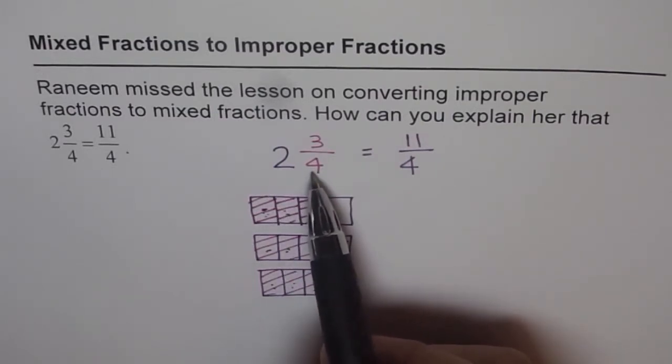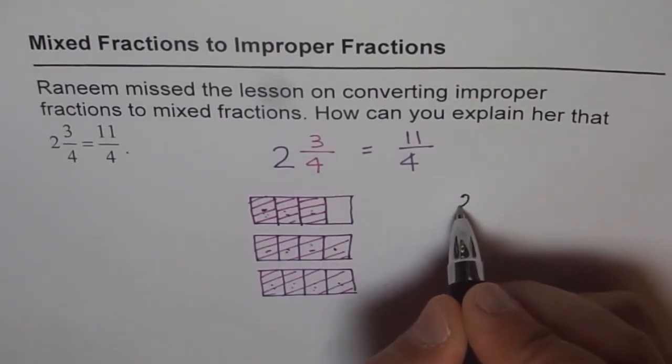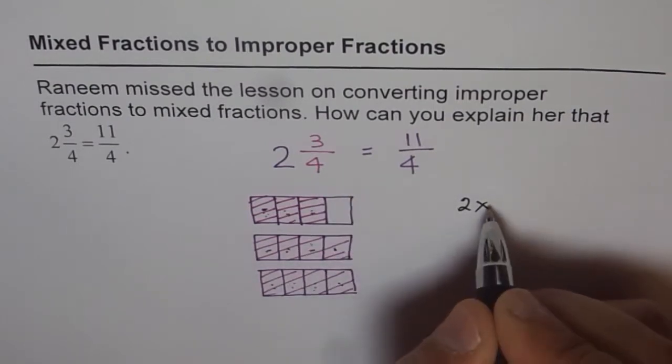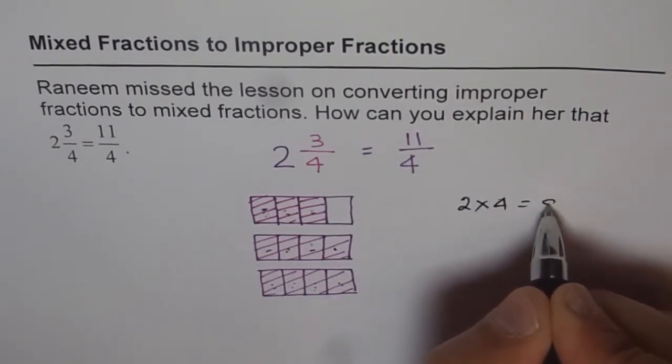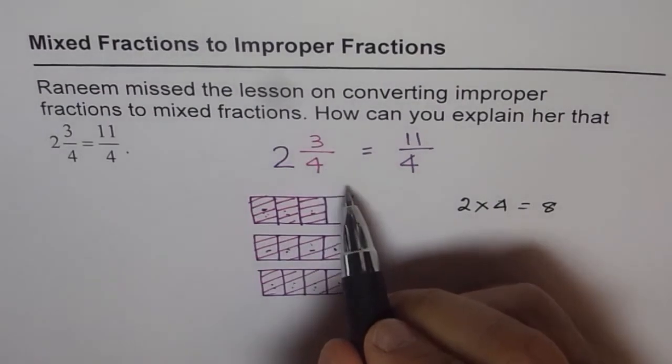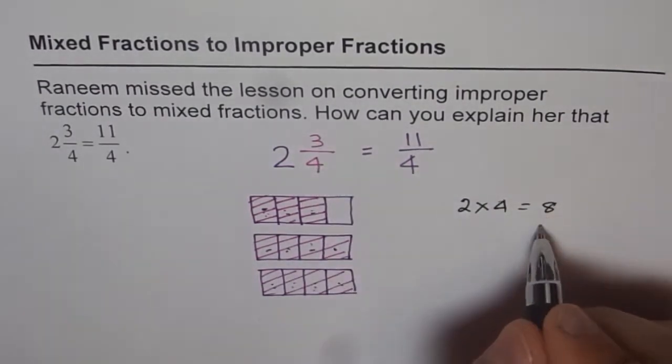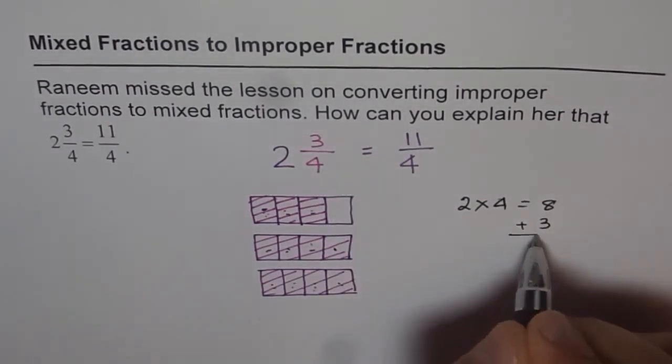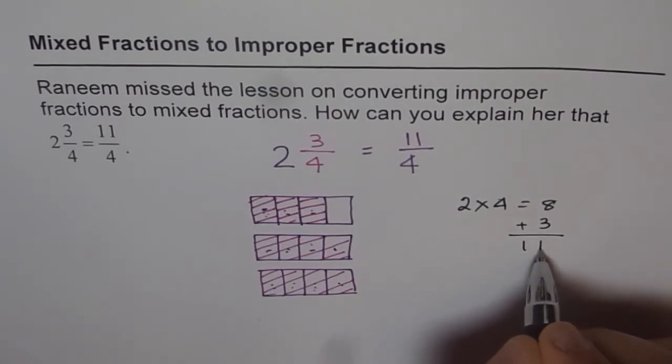Each will have 4 parts, right? So what do we get? Two will have how many parts? 2 times 4, which is 8. And then we have another one in which you take 3 out of 4. So let us add 3 to 8. What do you get? You get 11.